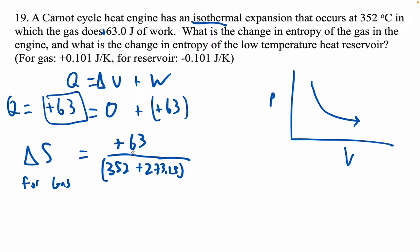Don't use Celsius or you'll get in trouble. Alright, so 63 divided by left parenthesis 352 plus 273.15. I'm getting that that's 0.10077. We do have three sig figs, so we'd have to say 0.101. And that's positive joules per Kelvin for the gas.